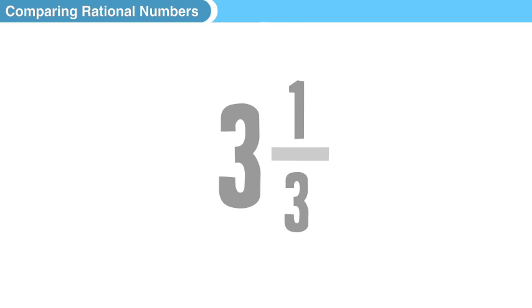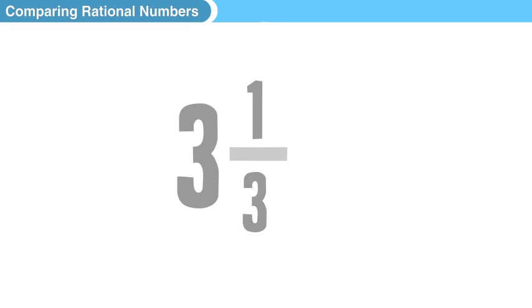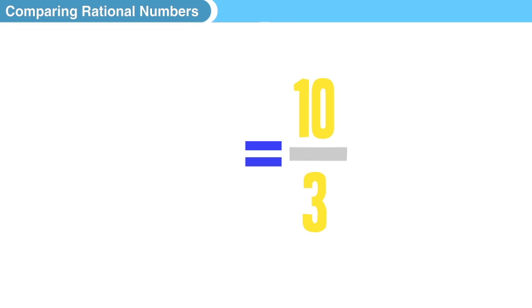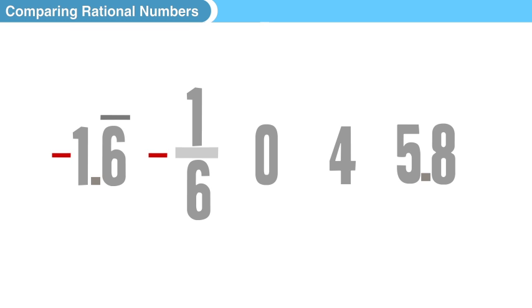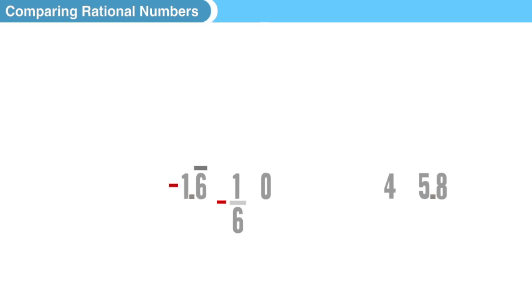And this also works for mixed numbers, once you convert them to improper fractions and then create decimals. And when we talk about comparing rational numbers, we're talking about comparing their value, or put another way, we're talking about where do the numbers fall on the number line.